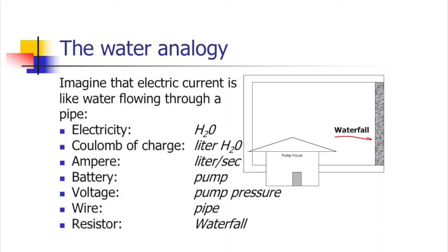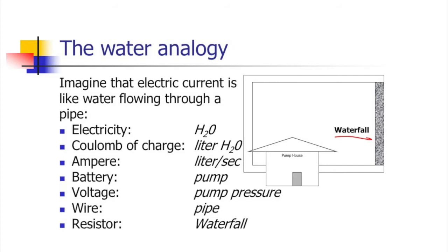Now let's talk about how current flows — always from positive to negative. Think of it like a pump house with a pool and waterfall: you build up pressure on one end to push water up, and it drops as it flows down. In electricity, you build up pressure and push current through resistors — like a light bulb — which drops the voltage across them.